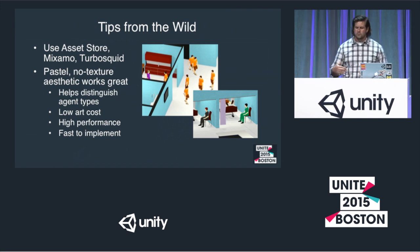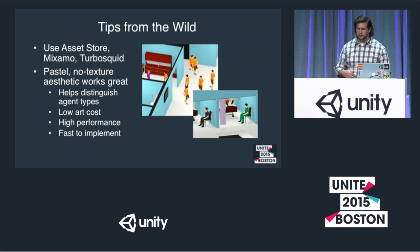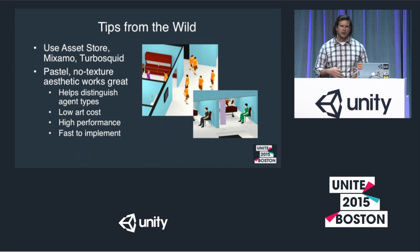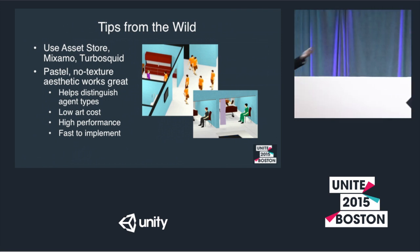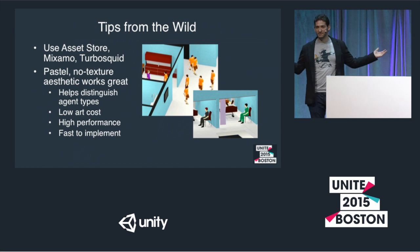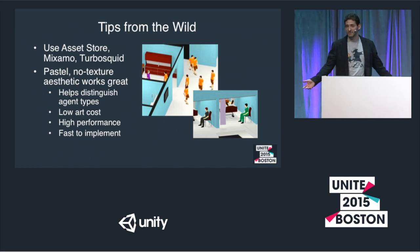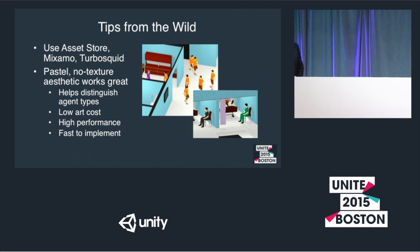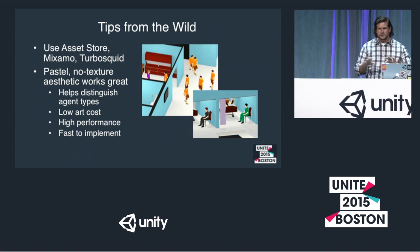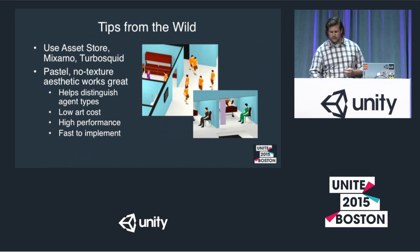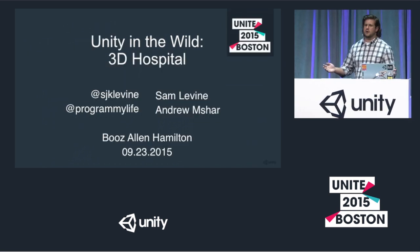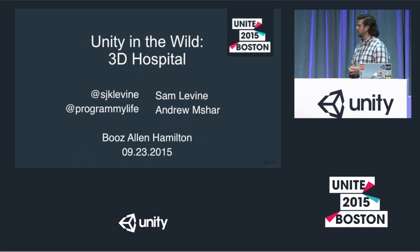We went with a pastel no-texture aesthetic for a number of reasons and it ended up working really well. We went textureless because the models came from different artists and could look completely different. It's a useful way to combine different sources into one simple visual style, see the differences between things you're looking at, get fast performance, and develop faster. That's all we have — if you want to talk about any of these prototypes afterwards, we'd love to.